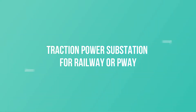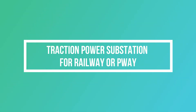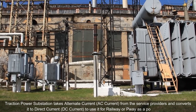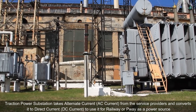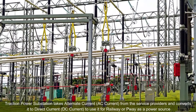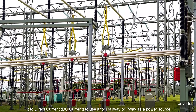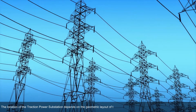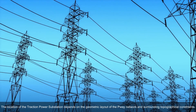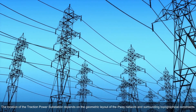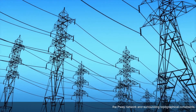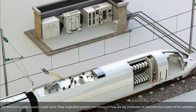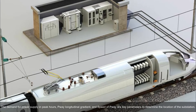Traction power substations for railway or P-way take alternating current (AC) from service providers and convert it to direct current (DC) to use as a power source for railway or P-way systems. The location of a traction power substation depends on the geometric layout of the P-way network, surrounding topographical constraints, peak hour power demand, longitudinal gradient, and speed of the P-way.